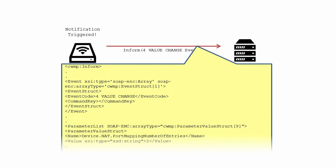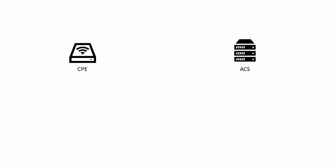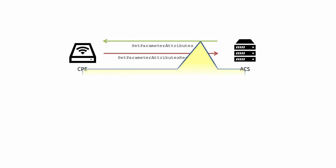In TR-69, the 4 VALUE CHANGE event code is used when a parameter set for notification is changed by any mechanism other than the ACS. These conditions are set using the Set Parameter Attributes RPC.